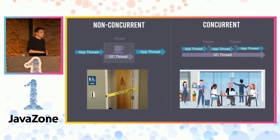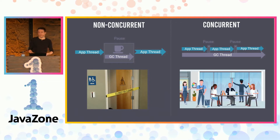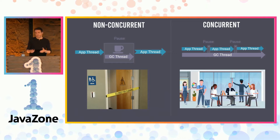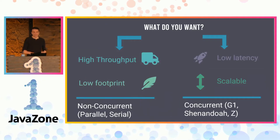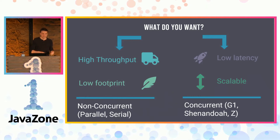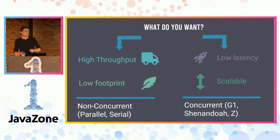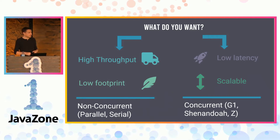The concurrent collectors are newer and more sophisticated. They are more gentle — they try to work with your application. They do most of their work while your application is running, but they have to slow down your application a little because they have to coordinate this work. For your users, it's better. What to choose? It depends on your needs. If you need very high throughput, very high speed, or low footprint, the non-concurrent are the best choice.